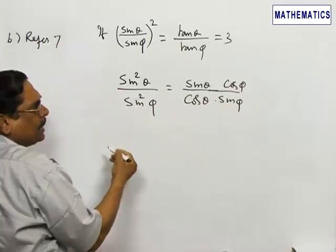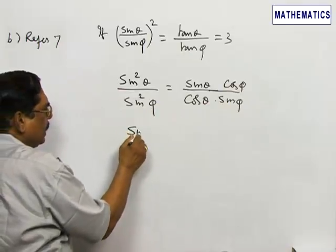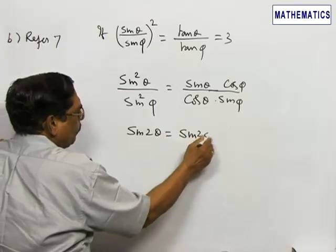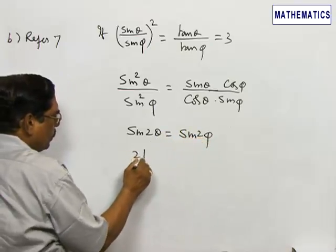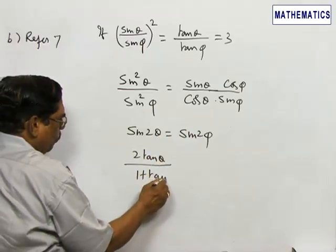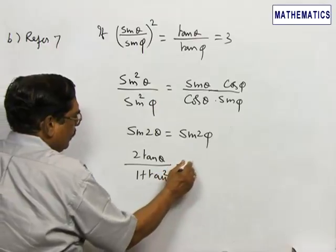This equals 2 tan θ / (1 + tan²θ) = 2 tan φ / (1 + tan²φ).